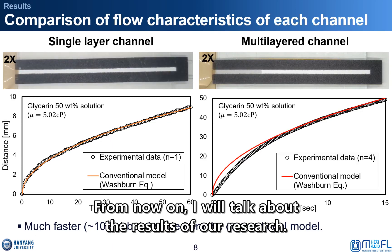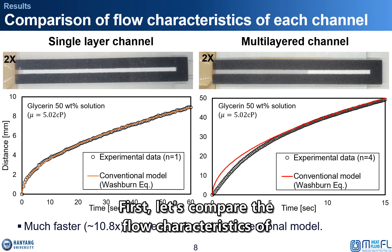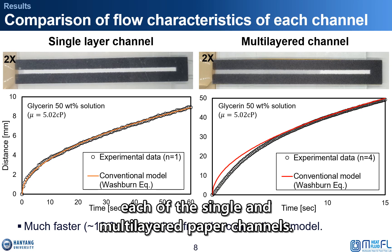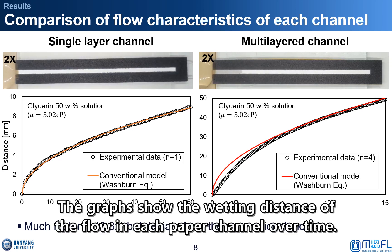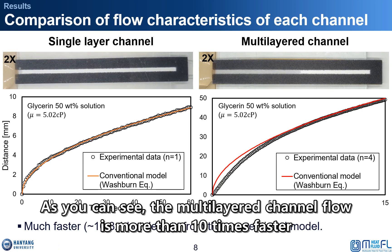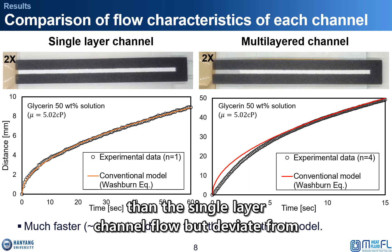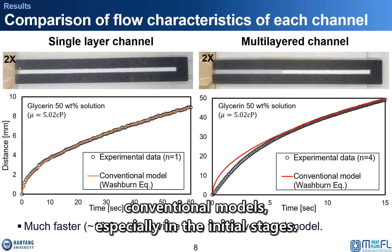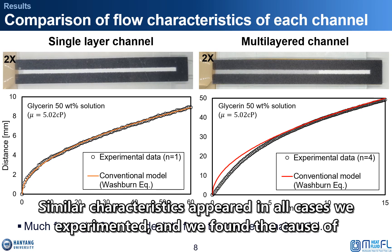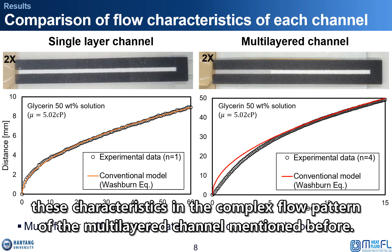Now I will talk about the results of our research. First, let's compare the flow characteristics of single-layered and multi-layered paper channels. The graph shows the wetting distance of the flow in each paper channel over time. As you can see, the multi-layered channel flow is more than 10 times faster than the single-layer channel flow, but deviates from conventional models, especially in the initial stages. Similar characteristics appeared in all cases we experimented, and we found the cause of these characteristics in the complex flow pattern of the multi-layered channel mentioned before.